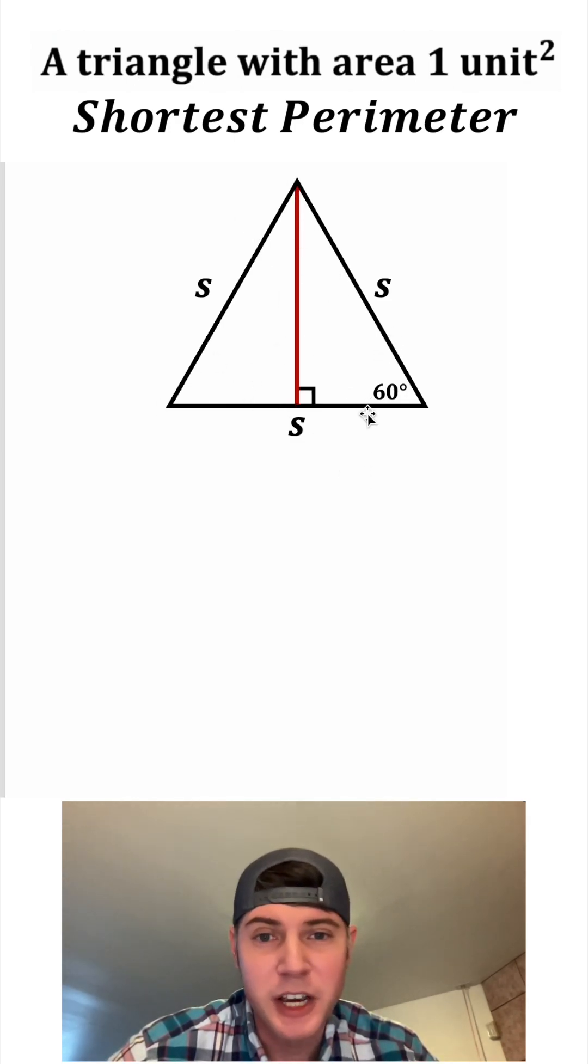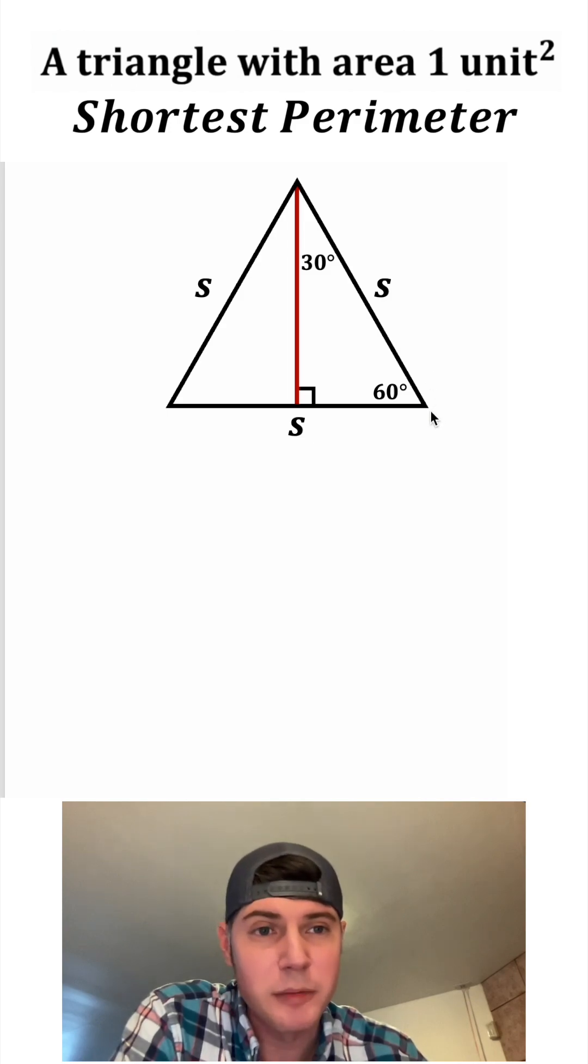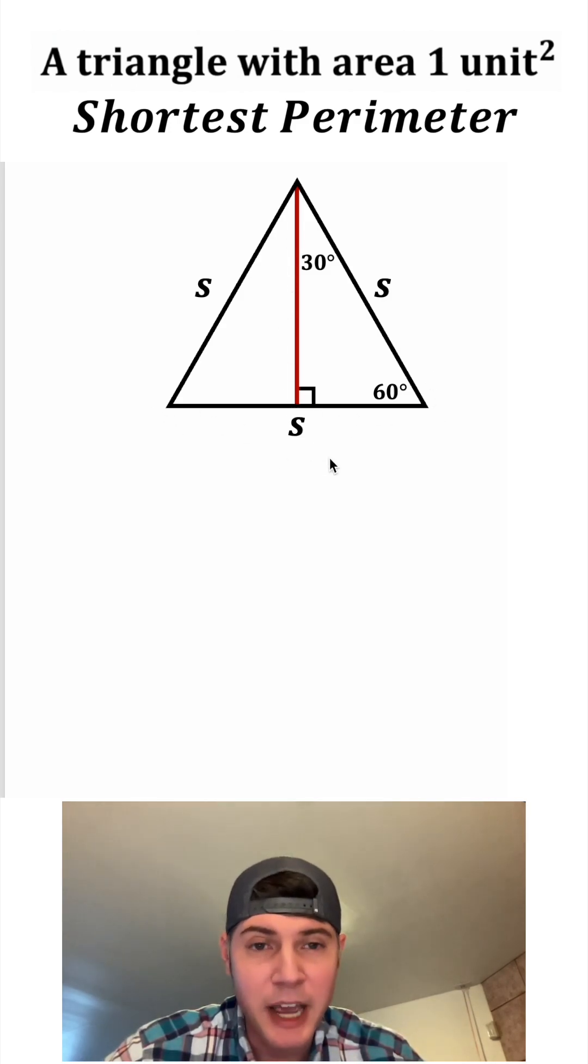Let's drop down a perpendicular line from this vertex. And since this is 60 degrees and this is 90 degrees, that makes this 30 degrees up here. The hypotenuse of this triangle is gonna be S and this line cuts this bottom in half. So this part of the triangle will be half of S.